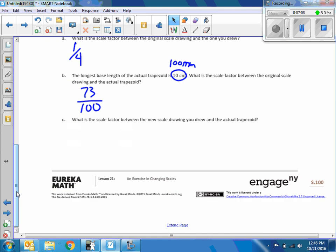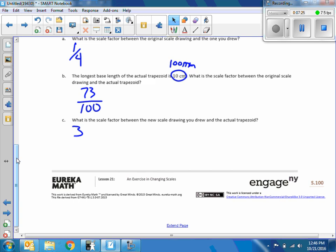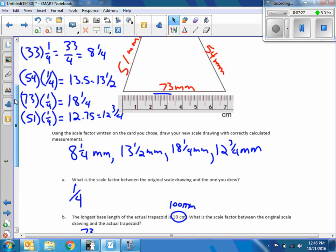If I choose my 33 millimeter side, the scale factor between the new drawing I drew and the actual one... Let's see, the longest base length of the actual trapezoid was 10 centimeters. The longest base length of this one is seven centimeters, three millimeters—7.3 centimeters.